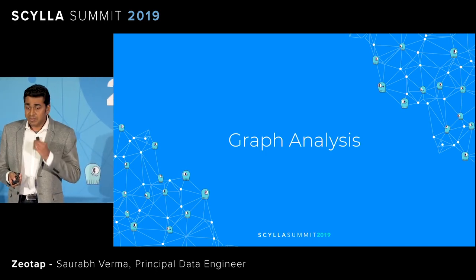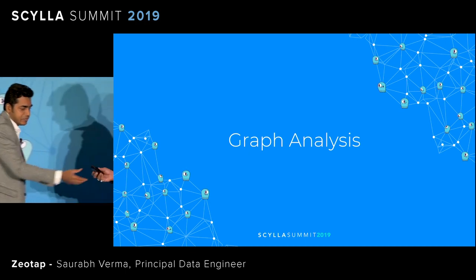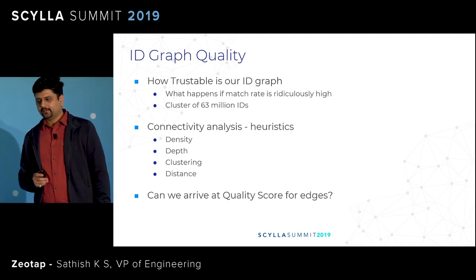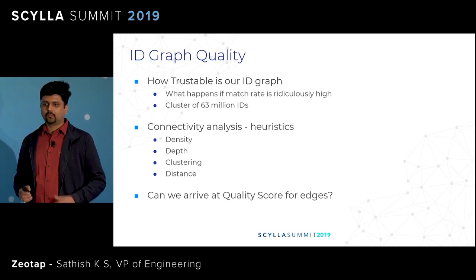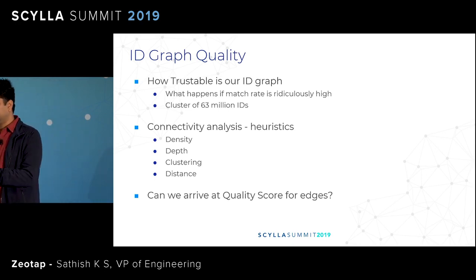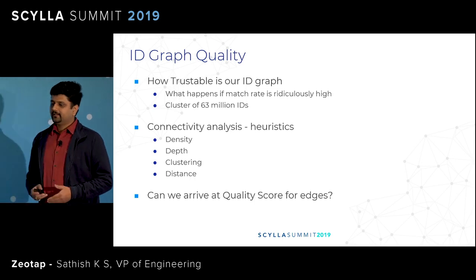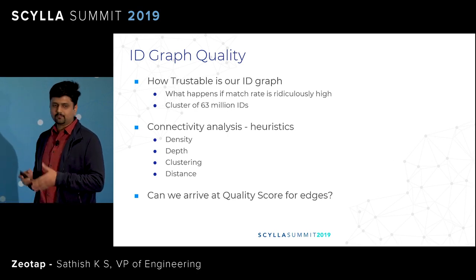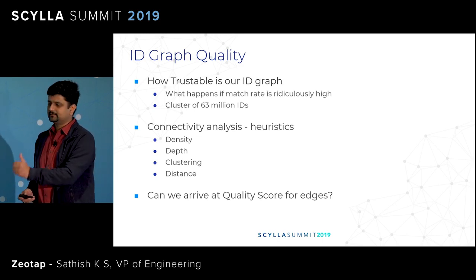Coming to the next important part, which is the ID graph analysis that drove us to the quality control mechanisms of our ID data assets. Zeotap takes pride in highest quality data sets. The specific quality problem in the context of graphs is how good our clusters are, how big they are, how trustable they are. In fact, one of the production clusters after injection was found to have around 63 million IDs in itself, which does not make sense. So we decided, based on the graph structure and metadata we have, to leverage some kind of statistical modeling, which leads to edge scoring. We are able to convert the match test as a ranking problem rather than just a simple traversal problem.